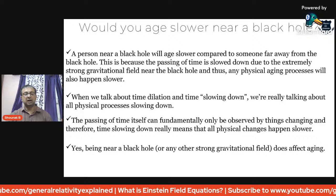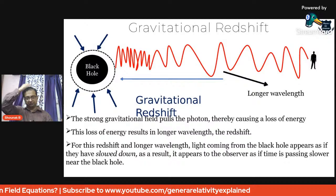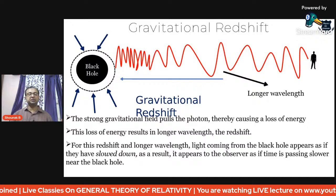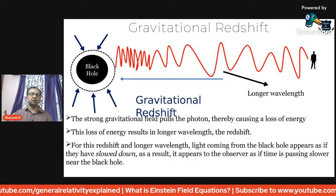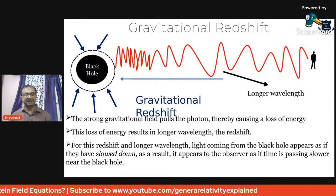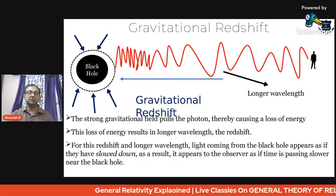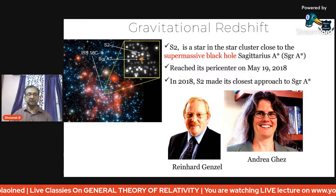This illustrates gravitational redshift: a strong gravitational field pulls on the photon, causing it to lose effective energy, resulting in a longer wavelength — a redshift. The law of conservation of energy remains intact. There is also blueshift in the reverse case. A person standing far from the black hole will always see the infalling person still approaching, even though that person has already crossed the event horizon, because it takes a long time for the long-wavelength light to travel to the observer.